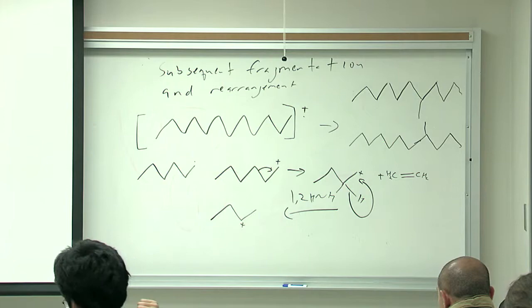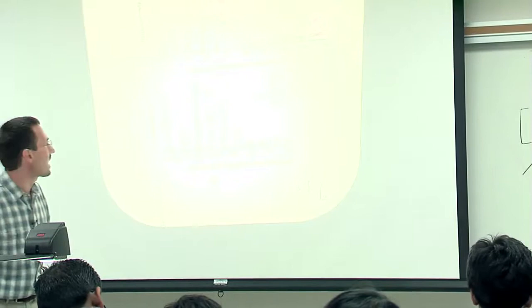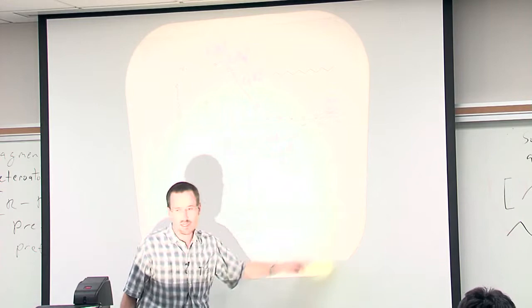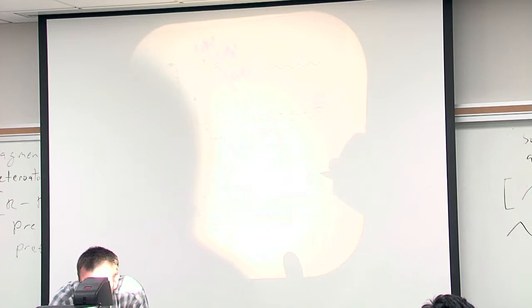If we look at the spectrum of 4-methyl undecane, we see a break in this usual pattern. The peak at 71 is enhanced and the peak at 57 is diminished. And for all intents and purposes you don't see the molecular ion, or it's very, very small.